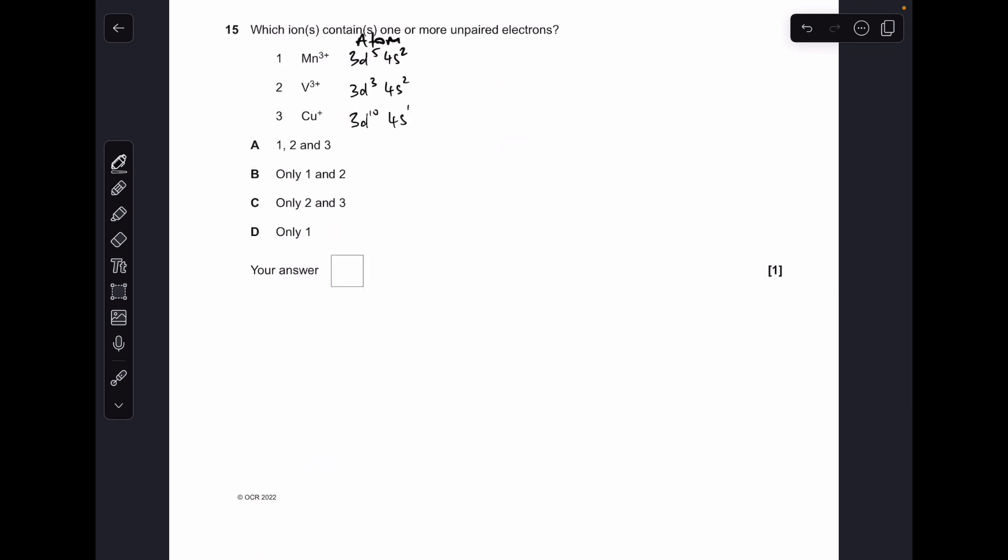Finally, number 15. I've written down the last part of the electron configurations of the atoms. To get the Mn³⁺ ion, we lose the 4s² electrons first—remember, they go first—and one of those 3d electrons, so it goes to 3d⁴. V³⁺, we lose 4s², then one of the 3d³s, going down to 3d². Copper 1+ is one of the weird transition elements. It doesn't have that traditional 4s² configuration. 3d¹⁰ 4s¹ for the atom, so 3d¹⁰ for the 1+ ion. I've put the electrons in box version. Mn³⁺ does have unpaired electrons, so does V³⁺, but Cu¹⁺ doesn't. So 1 and 2 only, B.